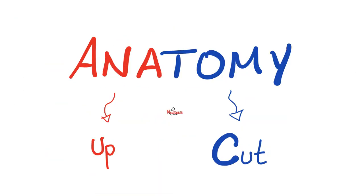Have you ever wondered what the word anatomy even means? Ana means up. Tome means to cut. There is a machine used by the pathologist known as the microtome — micro means small or microscopic, tome means to cut, so a microtome is a thin slicer that cuts into tissue. Anatomy literally means to cut you up, to dissect you.